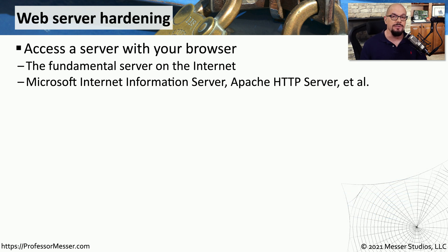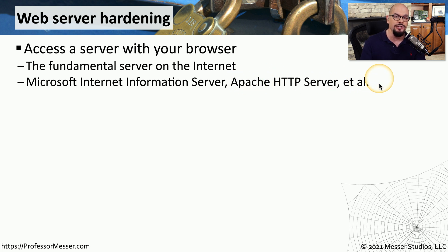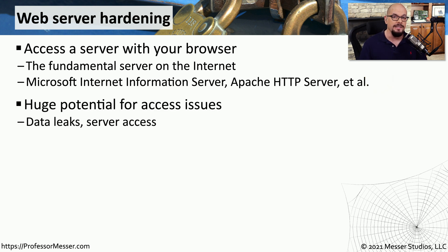One of the most popular server types on the internet is the web server. You'll find web server software running on Microsoft Windows with the Microsoft Internet Information Server, or in other operating systems you may find Apache HTTP Server, and there are also many other web servers available. Because this is often a device that is publicly facing and accessible to the internet, there's always the concern for having some type of data leakage.